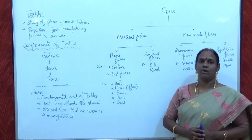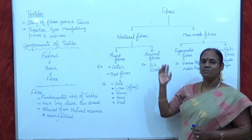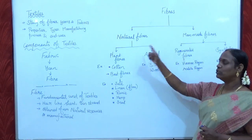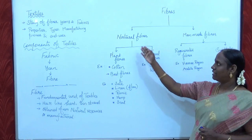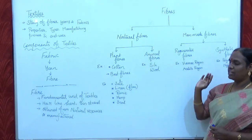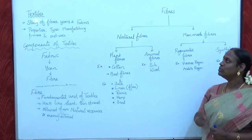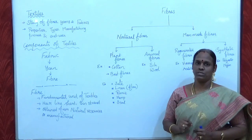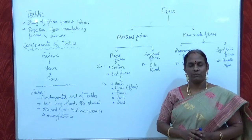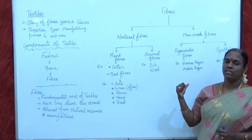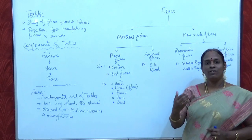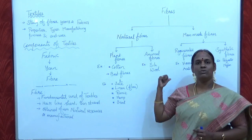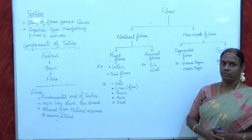Next, we are going to see about various types of fibres. Mainly, textile fibres are classified into two major types — natural fibres and man-made fibres. Fibres which are obtained from natural sources are known as natural fibres. Man-made fibres are manufactured by chemical processes using various chemicals.